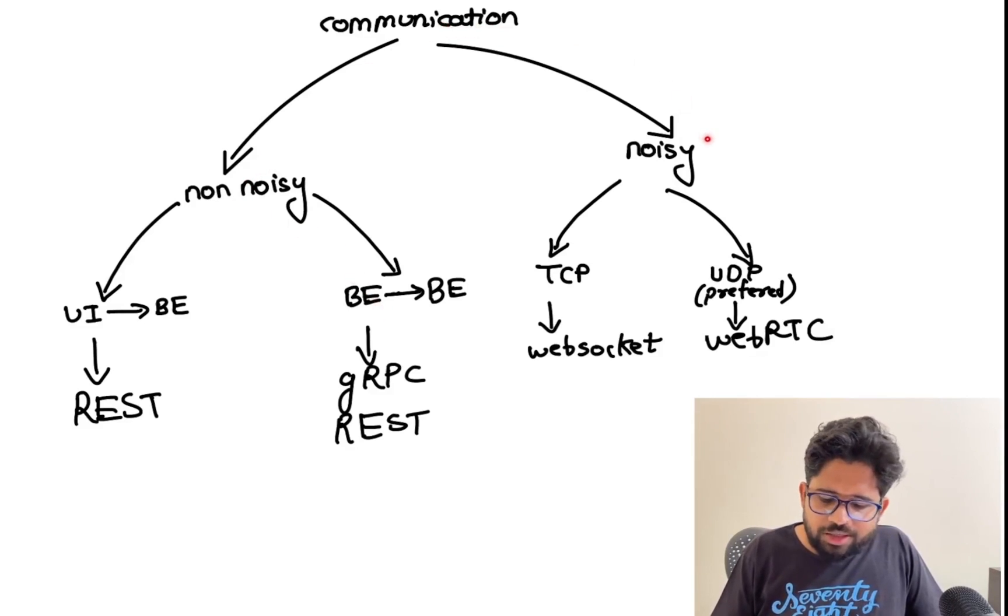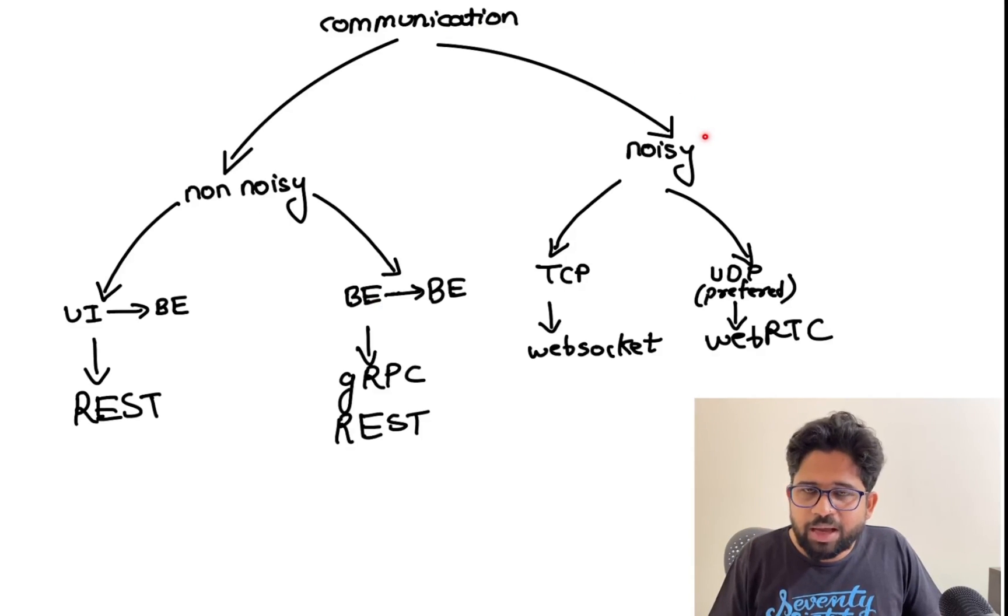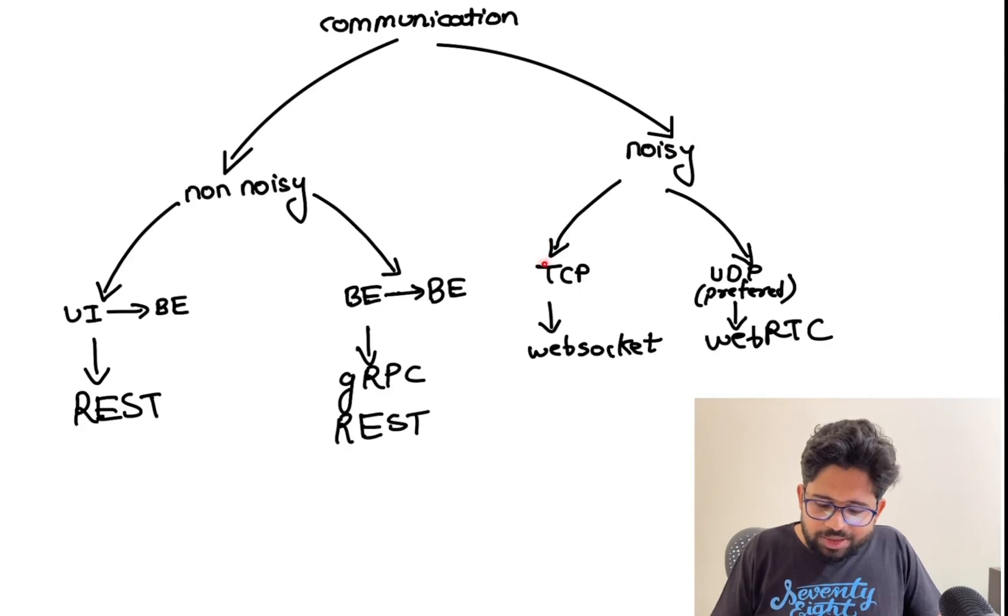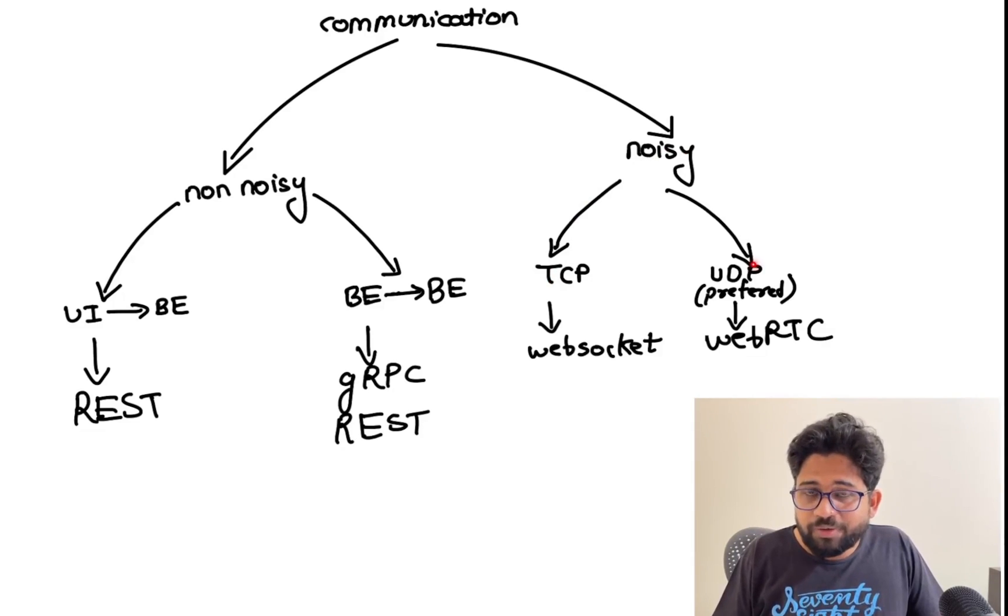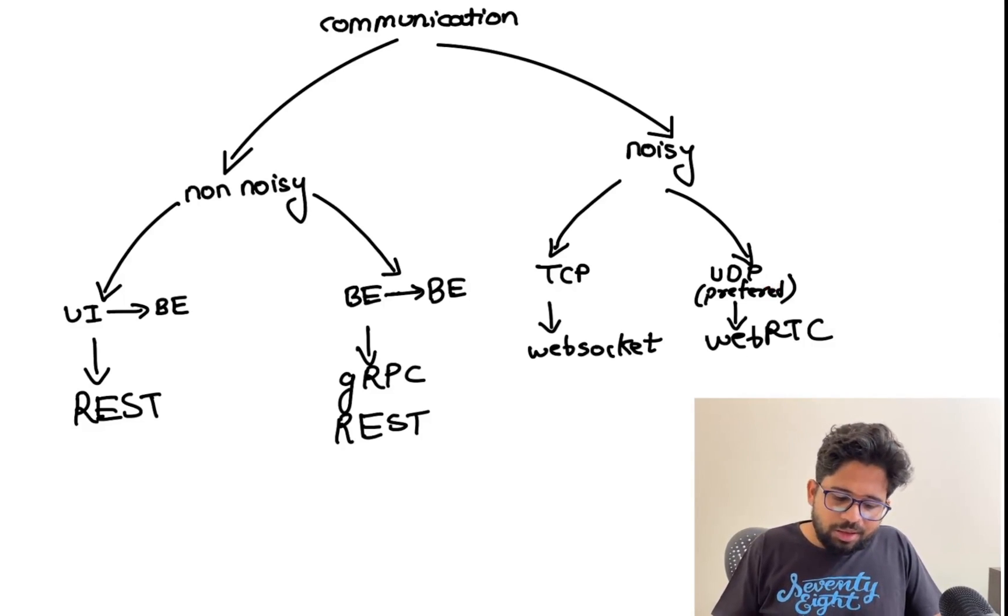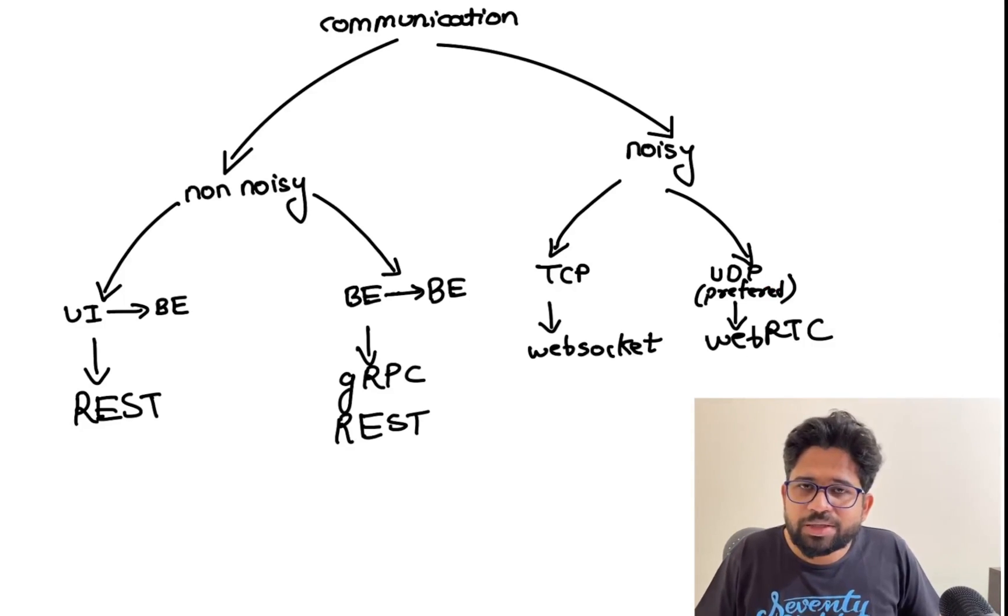If the communication is noisy—for example, gaming application, chatting application, video streaming—you can use TCP or UDP. If you're using TCP, you can use WebSockets which use TCP underneath. If you're using UDP, if you want to prefer UDP because lots of video calling applications like Zoom and Teams use UDP, you can use WebRTC. With the help of this complete picture, you can solve lots of system design problems.